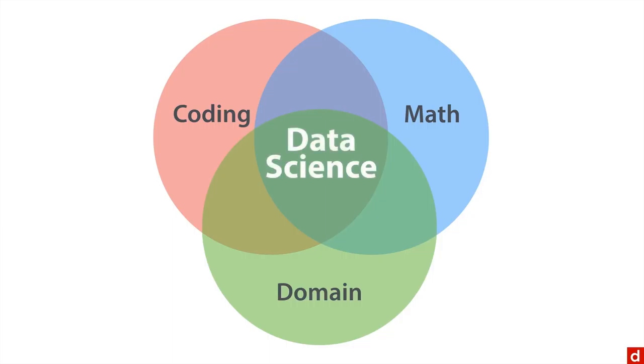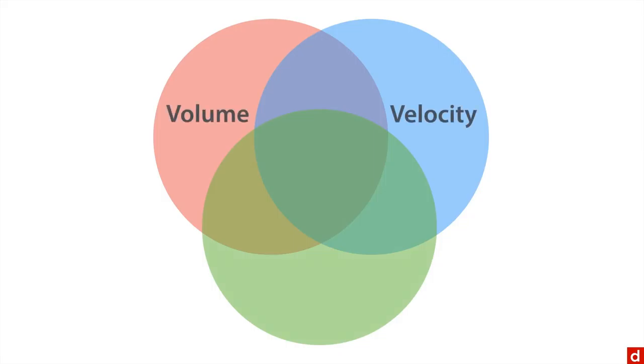On the other hand, Venn diagram number two is for big data. It also has three circles. And we have the high volume of data, the rapid velocity of data and the extreme variety of data. Take those three V's together, you get big data.